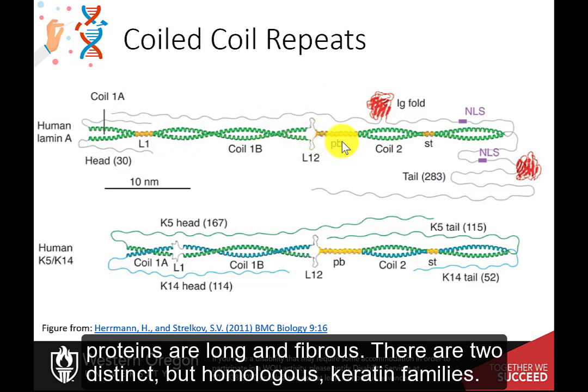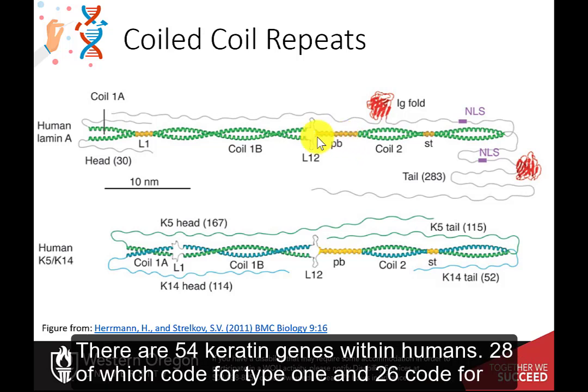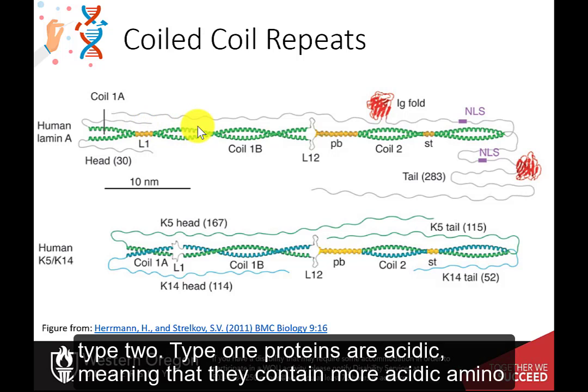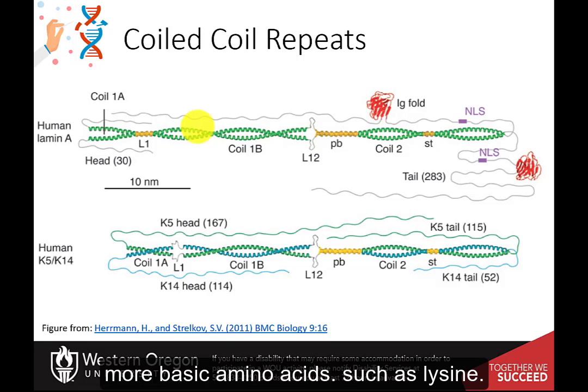Keratin proteins are long and fibrous. There are two distinct but homologous keratin families, named type 1 and type 2 keratins. There are 54 keratin genes within humans — 28 code for type 1 and 26 code for type 2. Type 1 proteins are acidic, containing more acidic amino acids such as aspartic acid, while type 2 proteins are basic, containing more basic amino acids such as lysine.